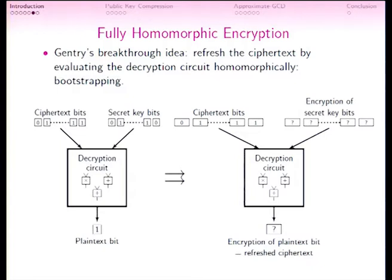We modify this circuit by replacing every AND gate with a homomorphic multiplication of ciphertexts, and every XOR gate with an addition of ciphertexts. We perform exactly the same operations, except now we are manipulating ciphertexts instead of individual bits — because multiplying two ciphertexts corresponds to AND of the corresponding plaintext bits.